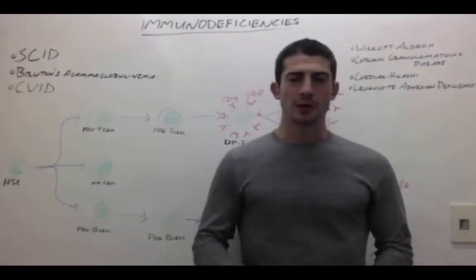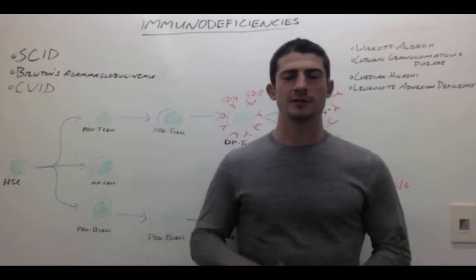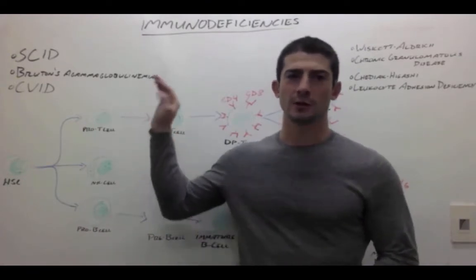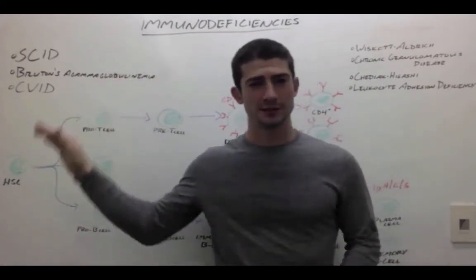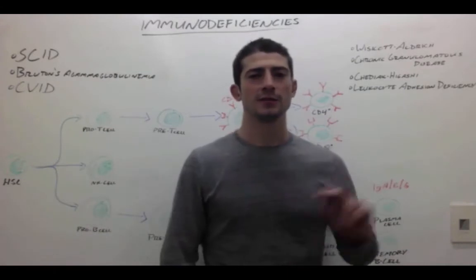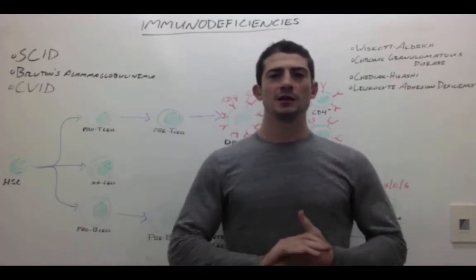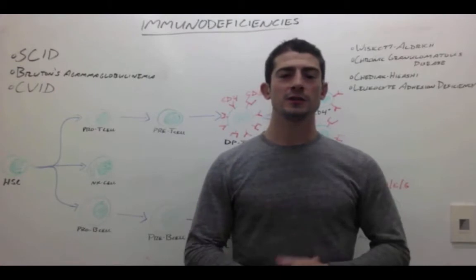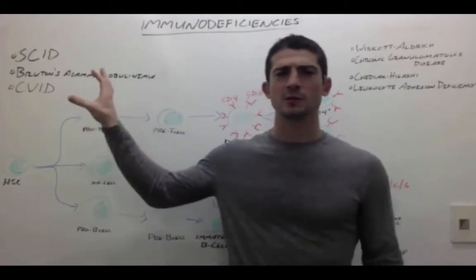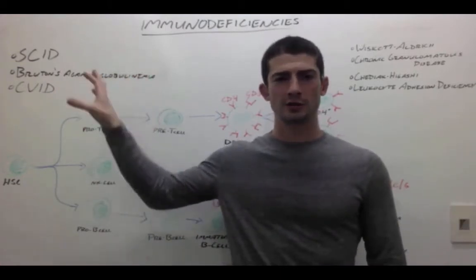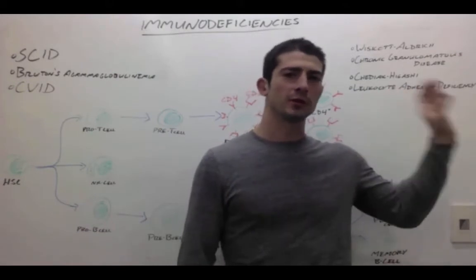Hi, my name is John Barber. This is going to be a two-part series on immunodeficiencies. First, we're going to start with SCID, Bruton's agammaglobulinemia, and CVID. The second video will be on Wiscott-Altredge, chronic granulomatous disease, Chediak-Higashi, and leukocyte adhesion deficiency. I split them up this way because these are more problems with B and T cell production, while the others are more problems with leukocyte function.